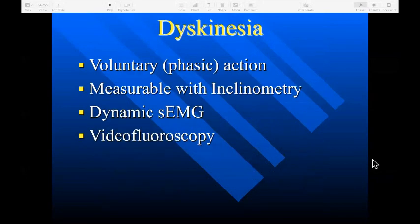Another manifestation of vertebral subluxation is dyskinesia — a disconnect between a voluntary motion that a person wishes to execute and the ability to do so. Dyskinesia relates to phasic action and can be measured with inclinometry and dynamic surface EMG to assess symmetry and detect areas of asymmetrical increased activity indicating aberrant loading. We can also utilize motion studies such as video fluoroscopy or motion MRI.